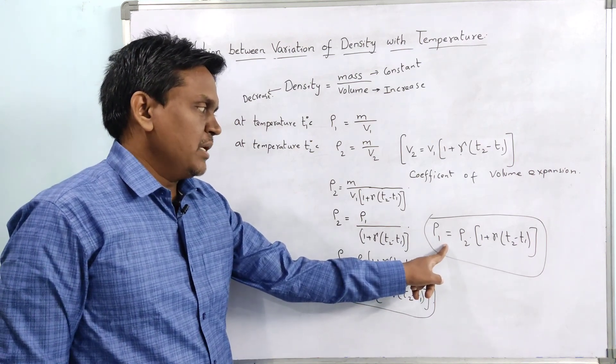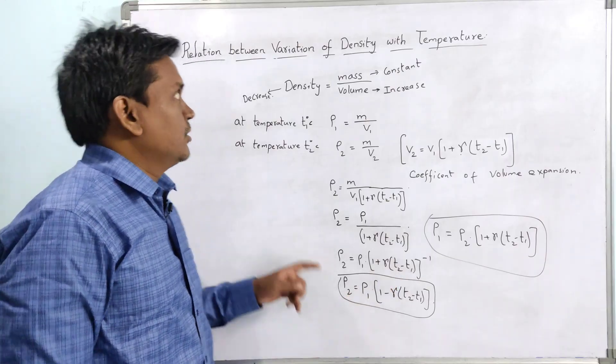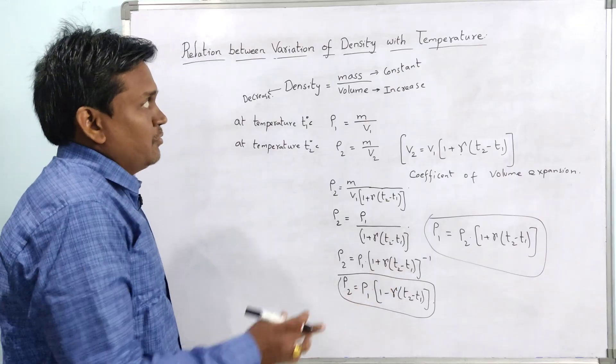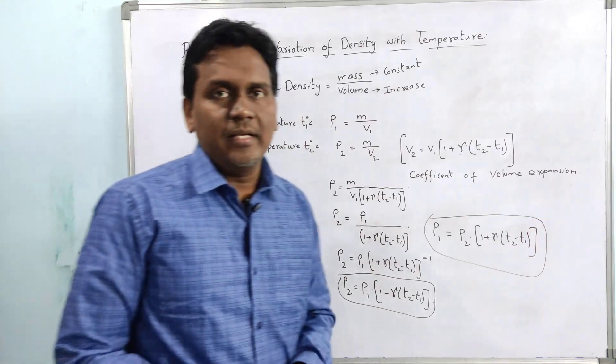This is the relation between density 1 at temperature T1 degrees and density 2 at temperature T2 degrees. So this is the relation between the variation of density with variation in temperature. Thank you.